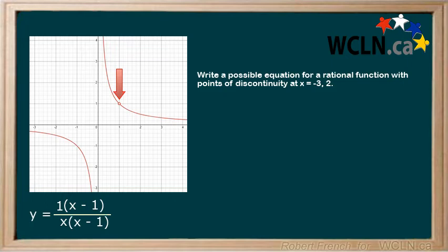In the second example, you are asked to write a possible equation for a rational function with points of discontinuity at x equals negative 3 and x equals 2.